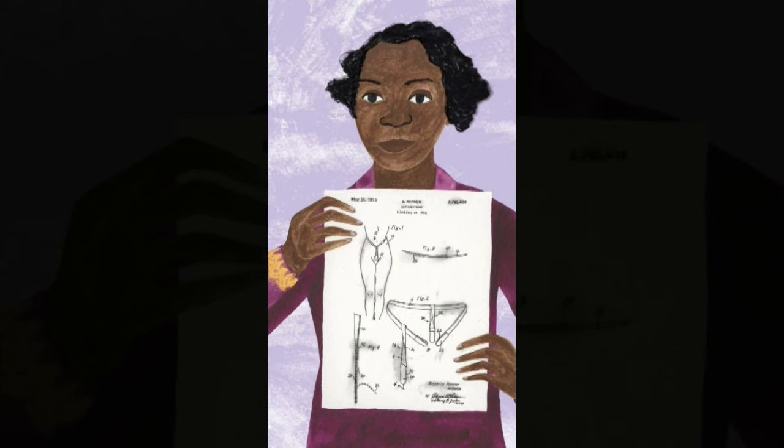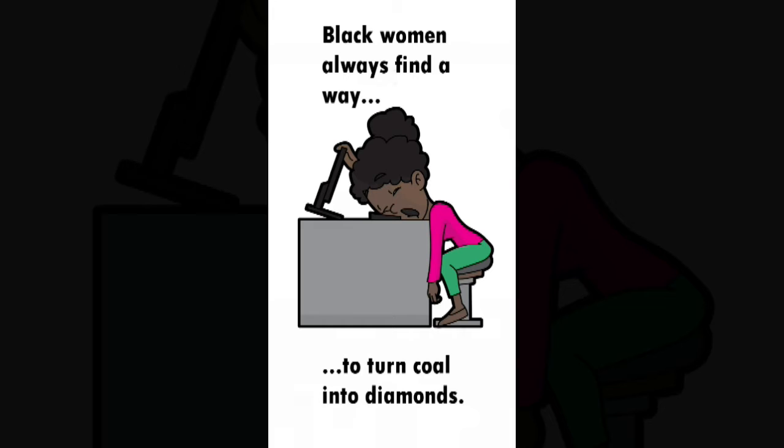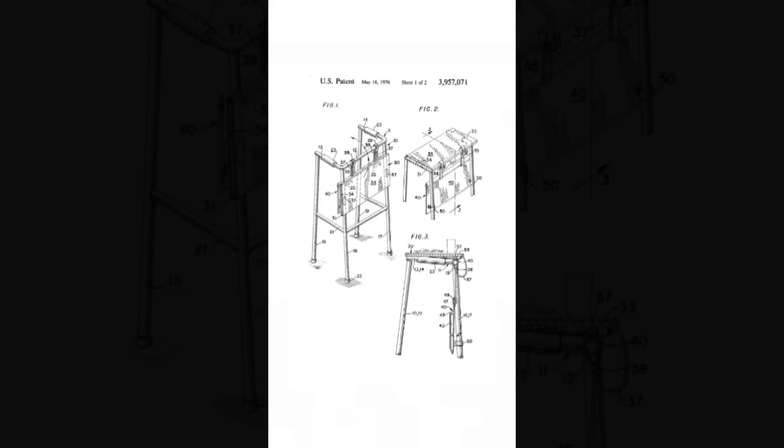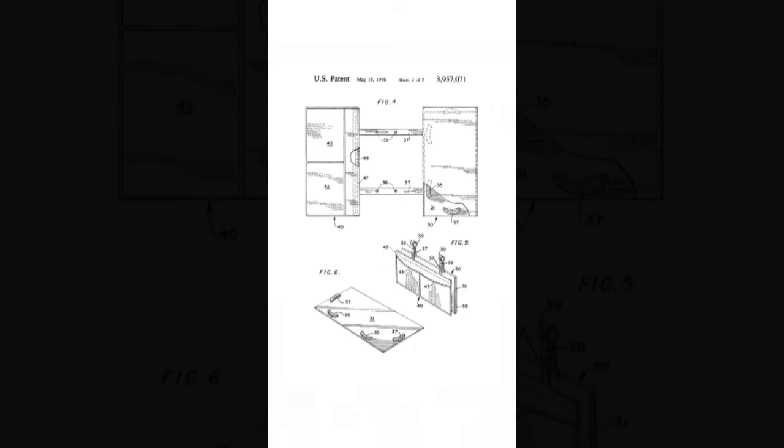She continued inventing despite the obstacles, including her sister being diagnosed with multiple sclerosis later in life. Following her sister's diagnosis, in 1976, Kenner patented a walker with an attachable tray and pocket for carrying items.